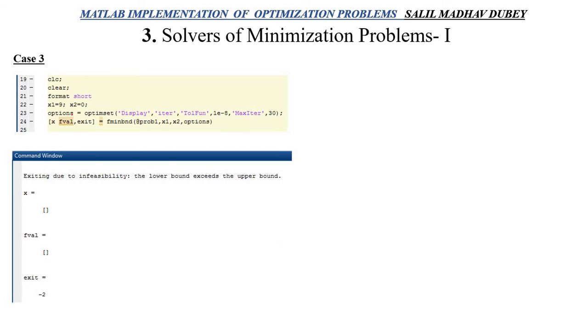Then case 3, when I run this, it will display in the command window: Exiting due to Infeasibility. The lower bound exceeds the upper bound. So automatically my exit value will be minus 2, meaning there is some inconsistency in the limits.